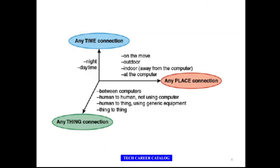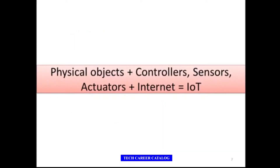These particular devices can be anywhere, any place, anytime — you just imagine what you can make. A simple definition has been proposed in formula form: physical objects plus controller, sensors, and actuators, plus internet connectivity makes IoT. It contains a microcontroller that provides intelligence, sensors that measure some physical parameter, actuators that act on some physical parameter, and a means of communicating via the internet or some other network.